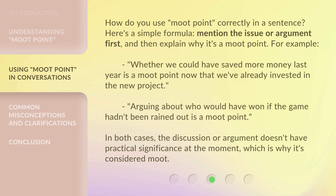How do you use 'moot point' correctly in a sentence? Here's a simple formula: mention the issue or argument first, and then explain why it's a moot point. For example, 'Whether we could have saved more money last year is a moot point now that we've already invested in the new project.' Arguing about who would have won if the game hadn't been rained out is also a moot point. In both cases, the discussion doesn't have practical significance at the moment, which is why it's considered moot.